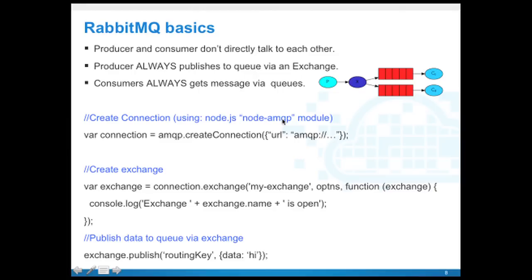From node.js perspective, we can use a node-amqp module. You can install it using npm install amqp.